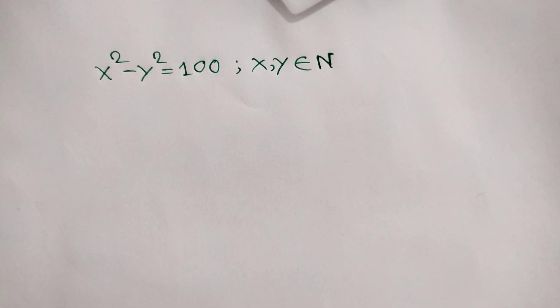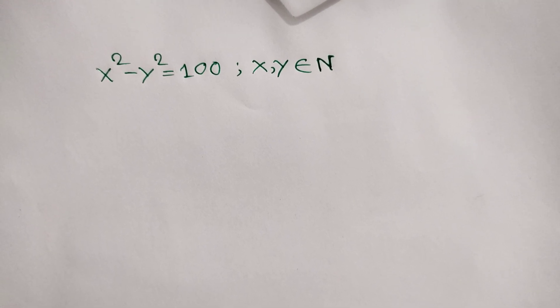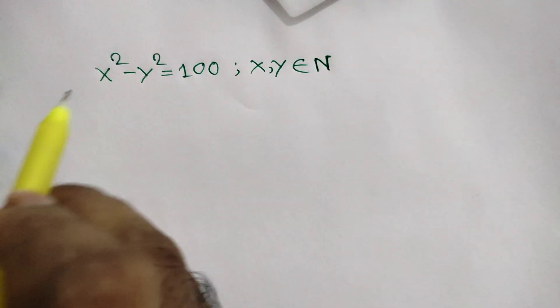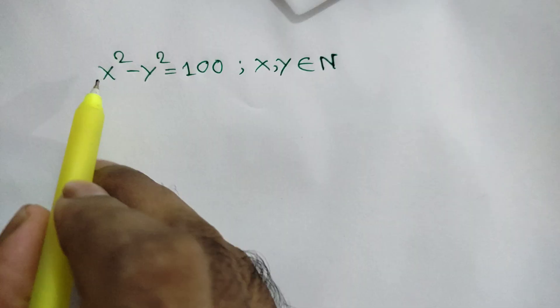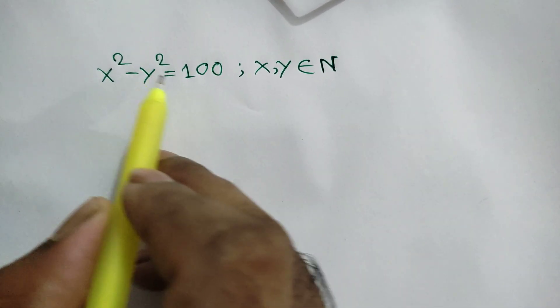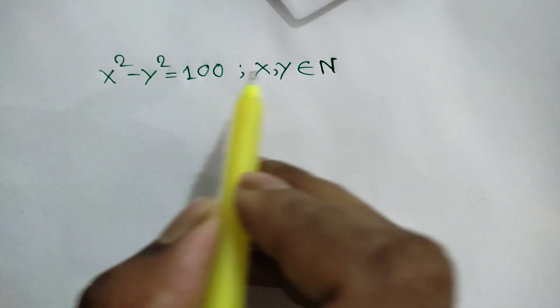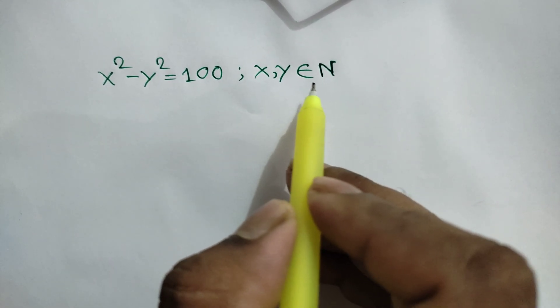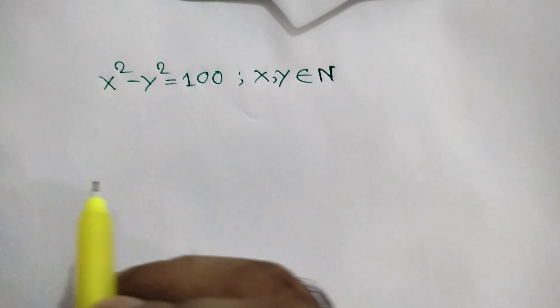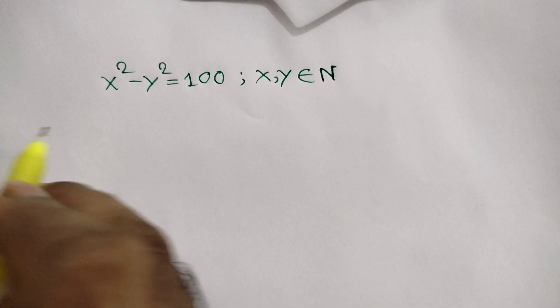Hi everyone. In this video I am going to show how to find the value of x and y where x squared minus y squared is equal to 100 and x and y are both natural numbers.